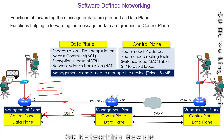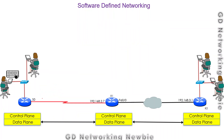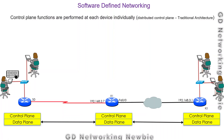Every networking device has these three planes. In traditional architecture, control plane functions are handled by each device individually, so every device performs its control functions on its own. This is called a distributed control plane — the control plane is distributed among all the networking devices.